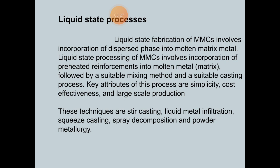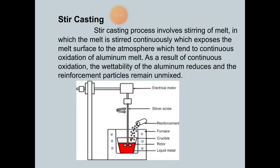Now turning to stir casting. Infiltration is further divided into three types: gas pressure infiltration, squeeze, and pressure dial. The stir casting process involves stirring of the melt continuously, which exposes the melt surface to the atmosphere and tends to cause continuous oxidation of the aluminum melt. As a result of continuous oxidation, the wettability of the aluminum reduces and the reinforcement particles remain unmixed.